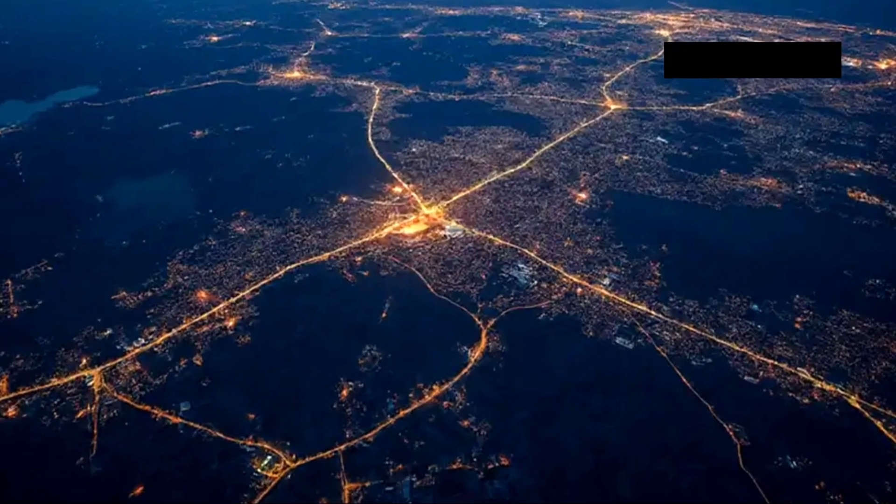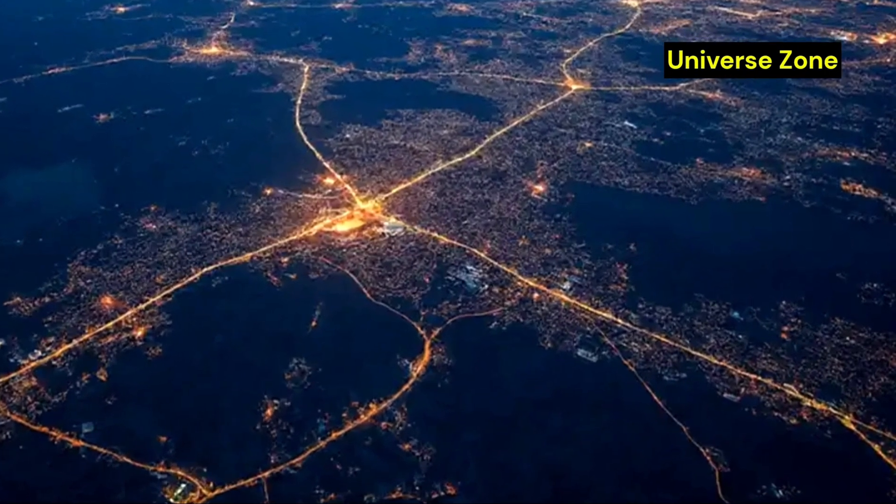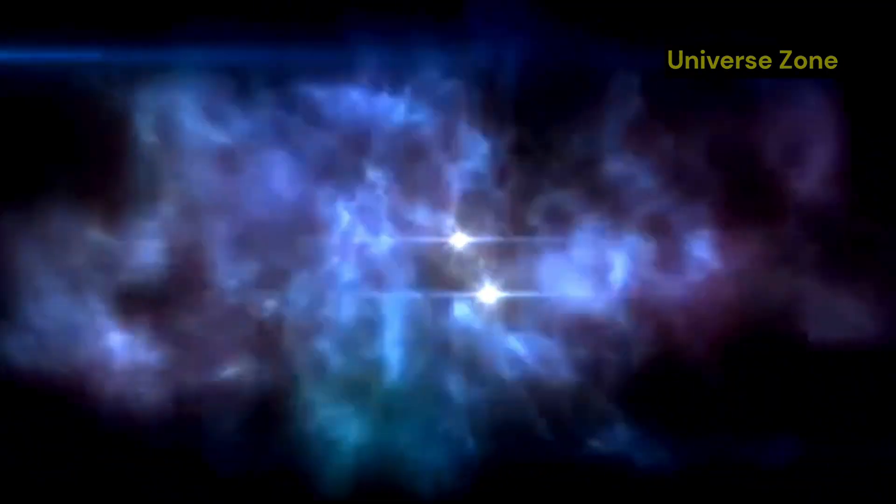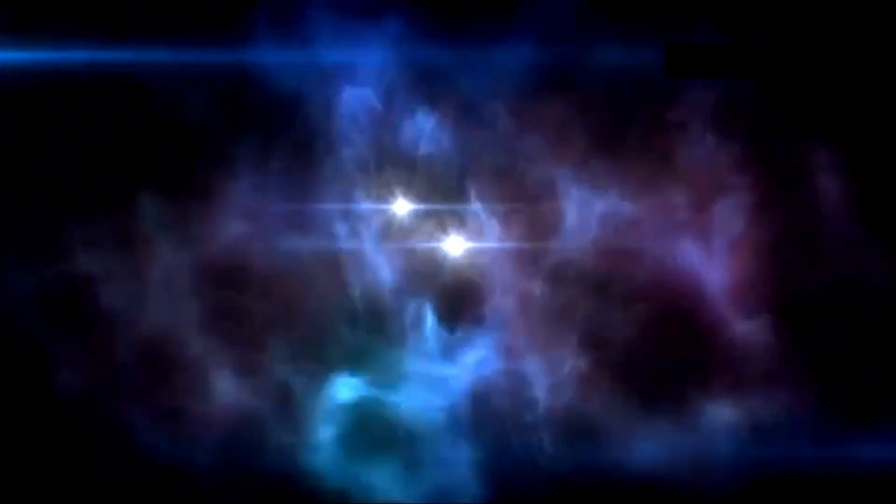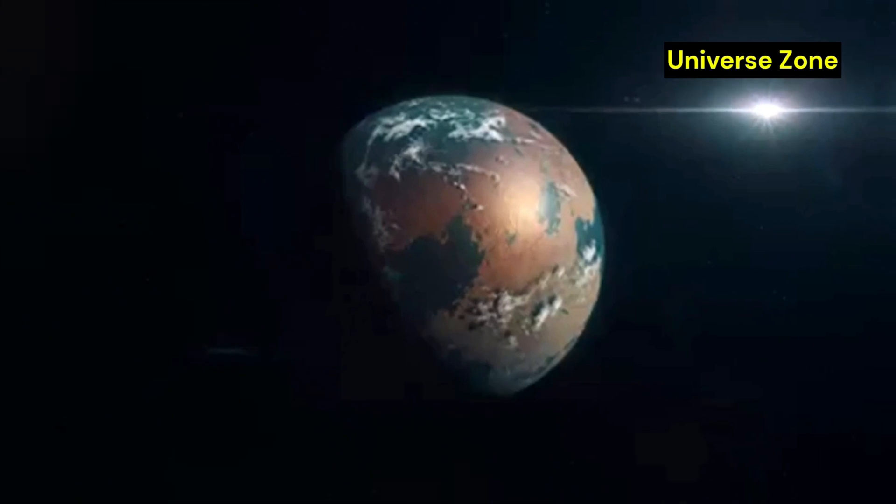Even if Proxima b does have an atmosphere, there is no guarantee that it is habitable. The planet is subjected to intense radiation from Proxima Centauri, which could make it difficult for life to survive.